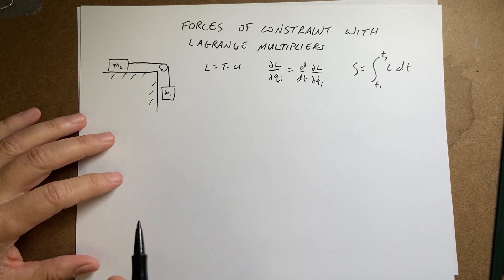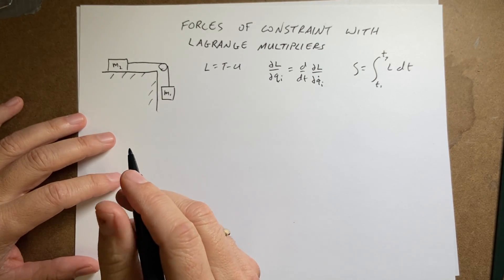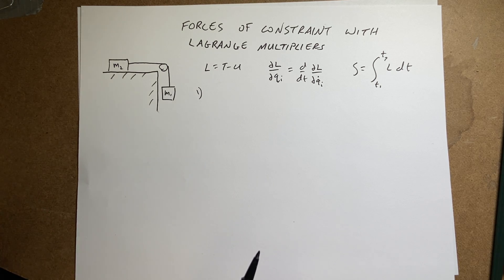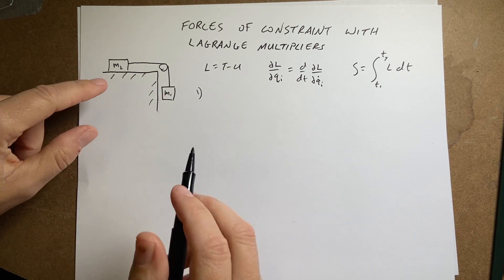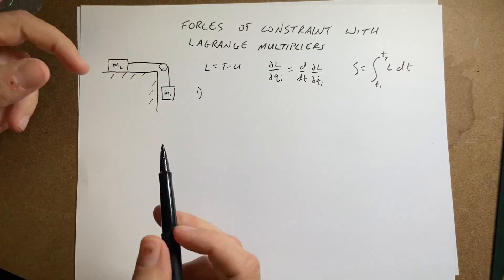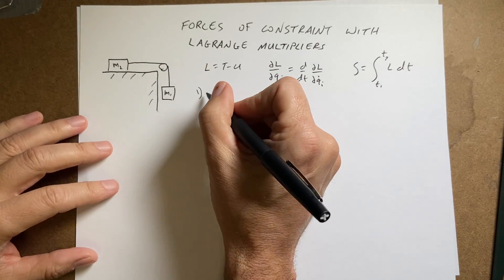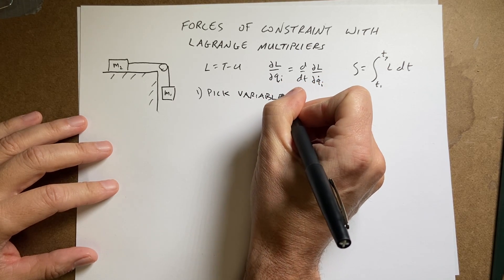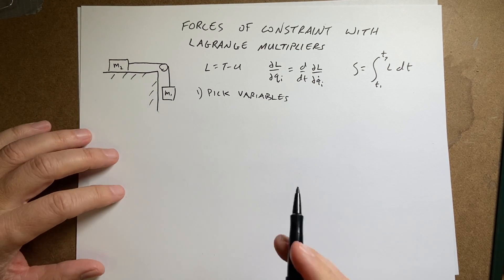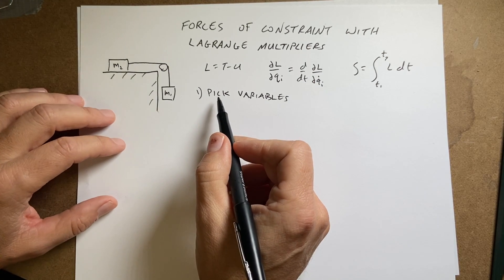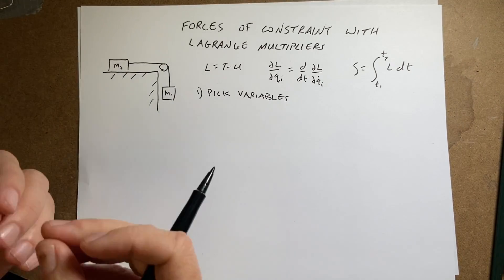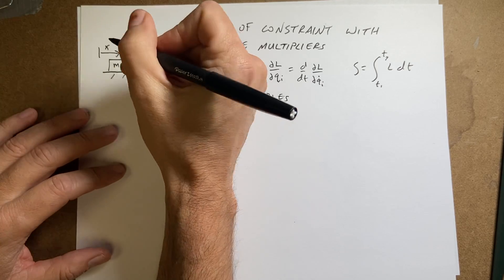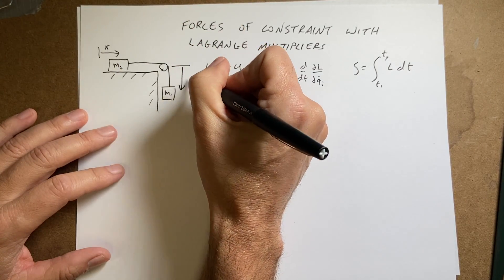This is where we use the idea of Lagrange multipliers. Step one is to pick the variables for the system. Now, this is a one degree of freedom situation — it can only move one way — but I'm going to pick two degrees of freedom, i.e., too many variables. I want to under-constrain the system so that I can find the force of constraint. So I'm going to call this position x, and I'm going to call this variable y.